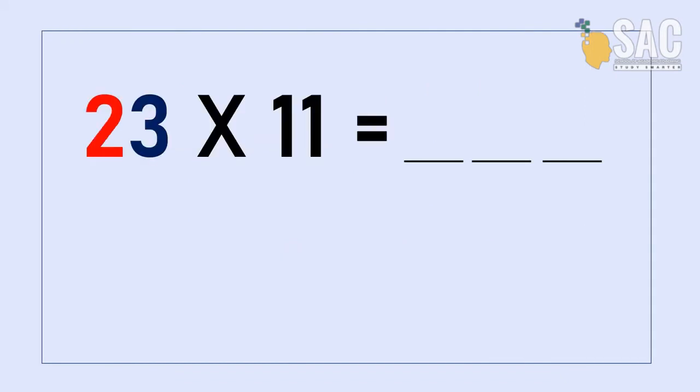So let's apply this rule to 23 times by 11. First number is 2, last number is 3, then the middle one is 2 plus 3, which is 5, so it will be 253.